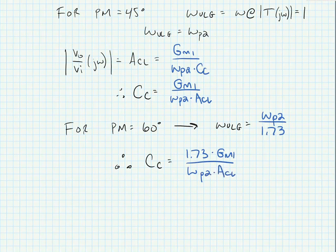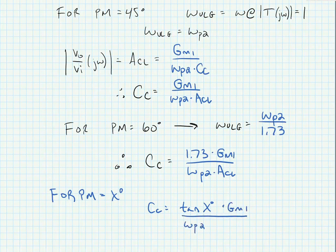In fact for a generic phase margin of x degrees we just multiply the compensation capacitor equation for the 45 degree phase margin by a factor of tangent of x degrees where x degrees is the desired phase margin. Now make sure that your calculator is set into the degree mode when you're doing that tangent or you'll get a wrong answer. You can always double check this for the 60 degree phase margin by making sure that for 60 degrees the factor is 1.73.